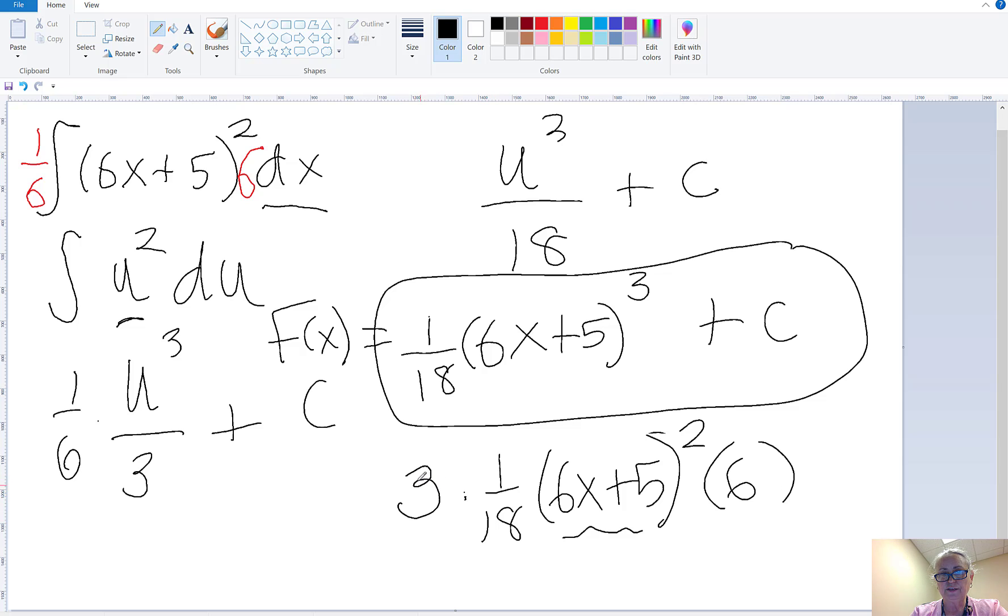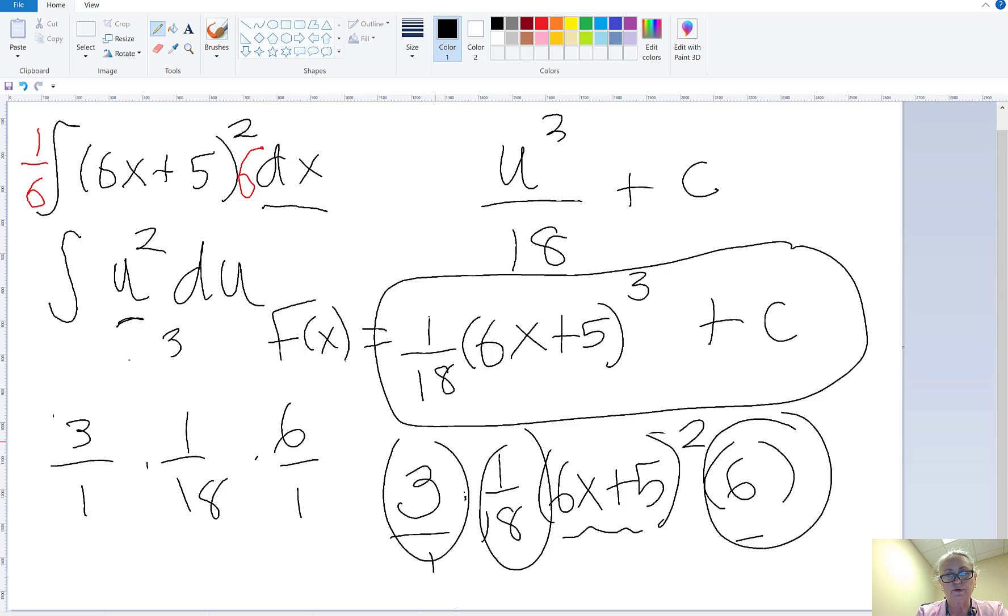And so look, I've got 3 over 18 times 6, so that's 3 over 1. Go over here, do a little arithmetic on the side. I've got a 3 over 1, a 1 over 18, and a 6 over 1 down here. I've got all these numbers, I can multiply them all together.